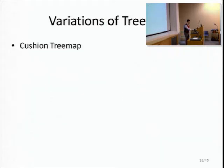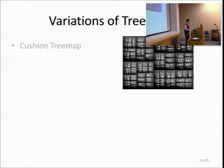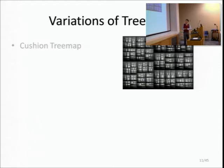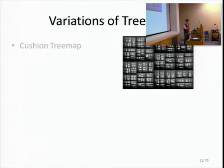There are variations of tree maps that try to improve on that. The cushion tree map adds an artificial 3D feeling to the containment relationship to try to emphasize the non-leaf nodes and their relationships to the root and each other. It's still a tree map, but branches are grouped more clearly together.